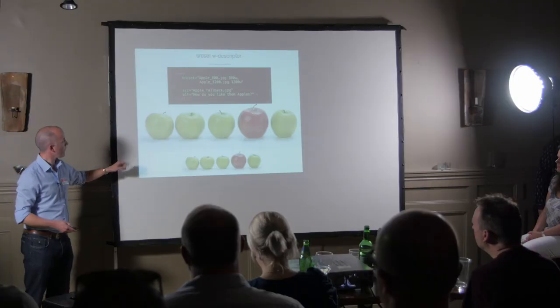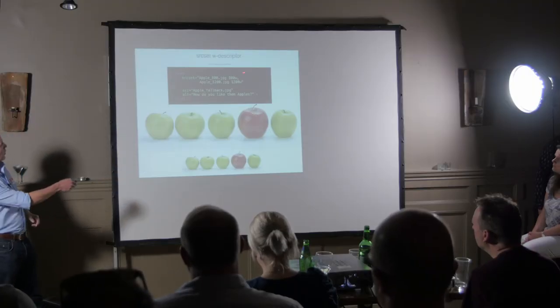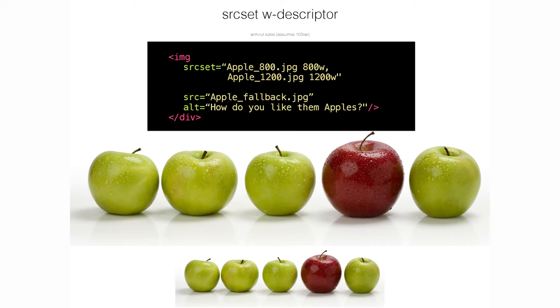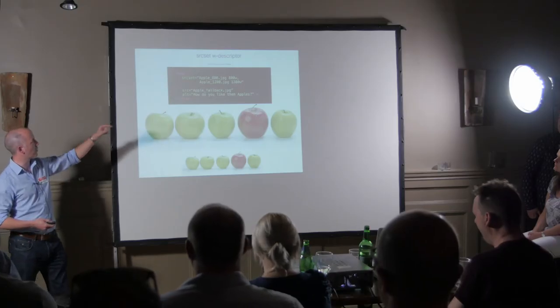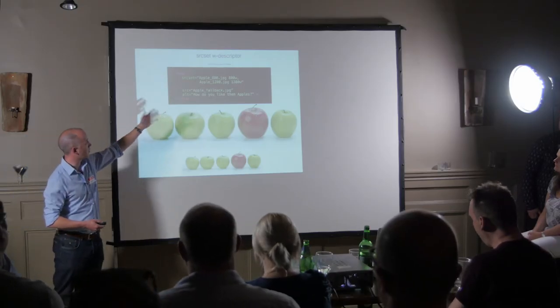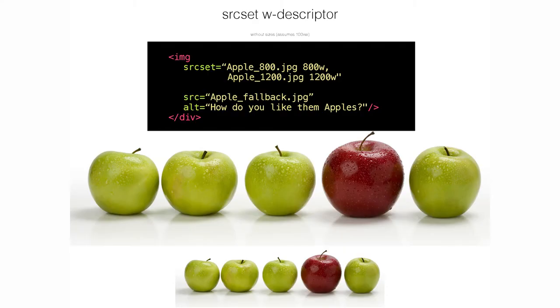Next, I'm using srcset with the 'w' descriptor. What you're doing here is telling the browser how big that image actually is — because without fetching the image it can't figure out how big it is, and the last thing you want it to do is go and get a load of images just to find out they're too big. This tells it: this image is 800 pixels wide, this one is 1200 pixels. Then, if srcset is supported, depending on the width of your device or browser, it fetches the one that fits. Utterly brilliant.